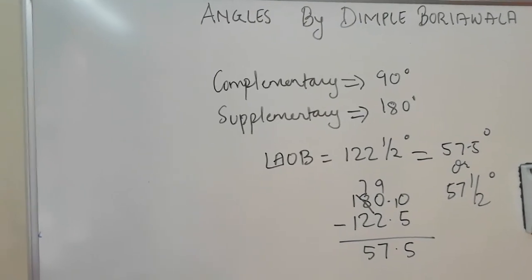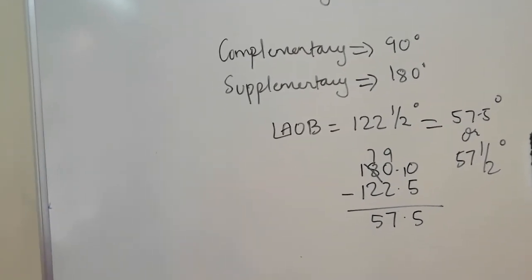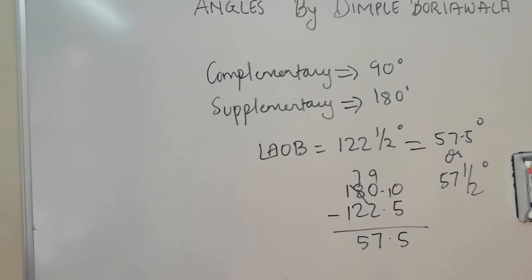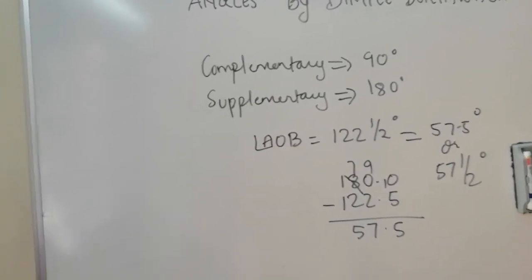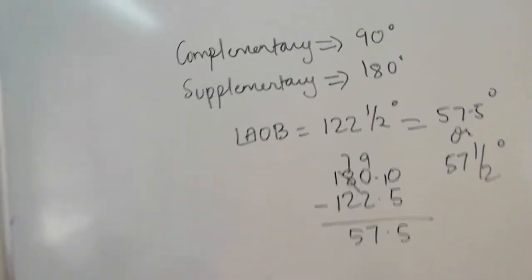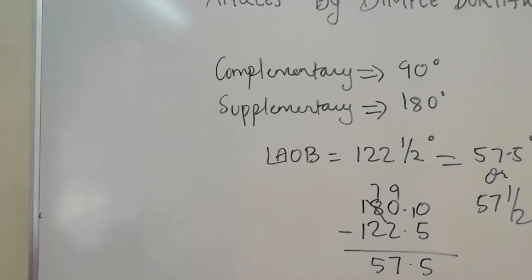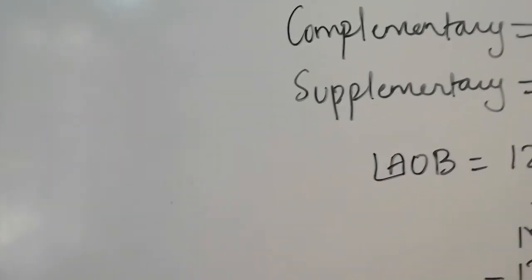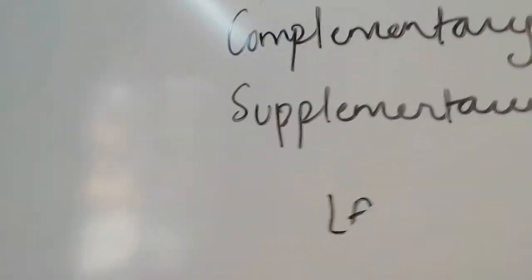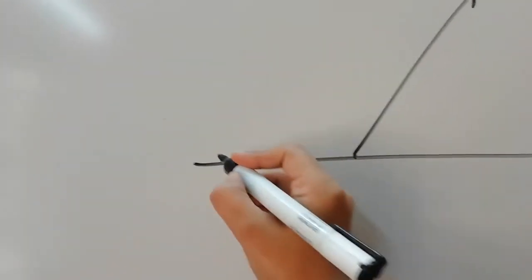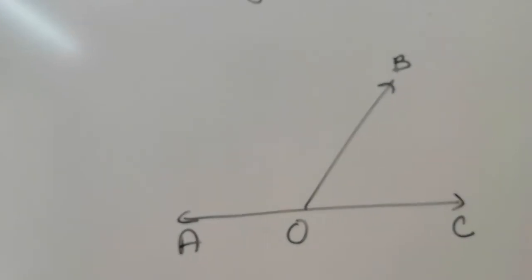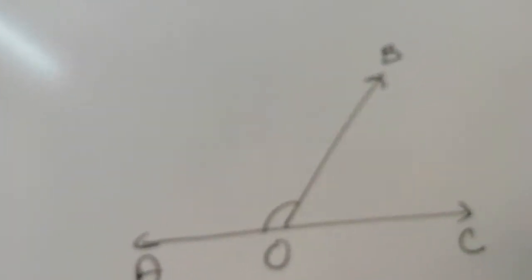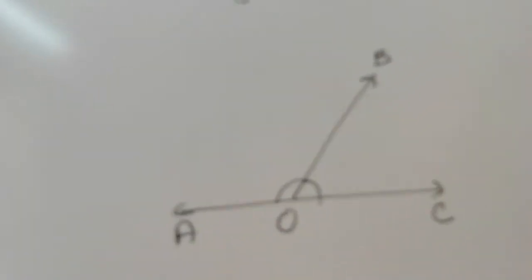This is crucial for students of grade 4, and grade 3 can also follow along. Grade 5 students need to watch further from here. Now, from here there is another angle which is called a linear angle. The linear angles here are angle AOB and angle BOC.